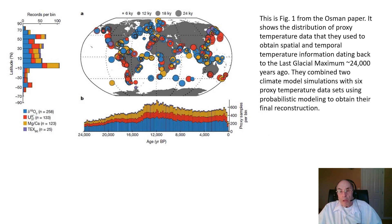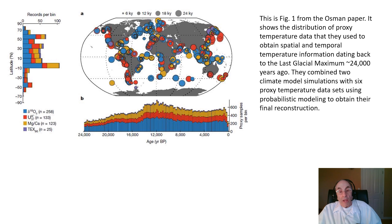Figure one from the Osmond paper shows the distribution of proxy temperature data used to obtain spatial and temporal temperature information dating back to the last glacial maximum, about 24,000 years ago. They combined two climate model simulations with six proxy temperature data sets using probabilistic modeling to obtain their final reconstruction. Using Bayesian probabilistic analysis, they extended this data into a global temperature map at 200-year intervals.